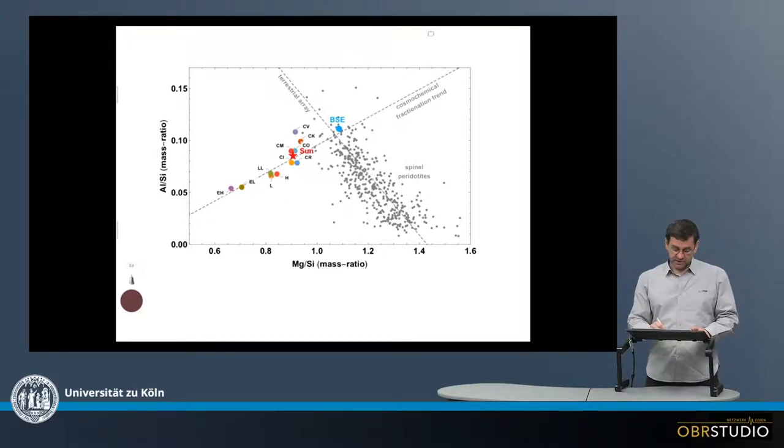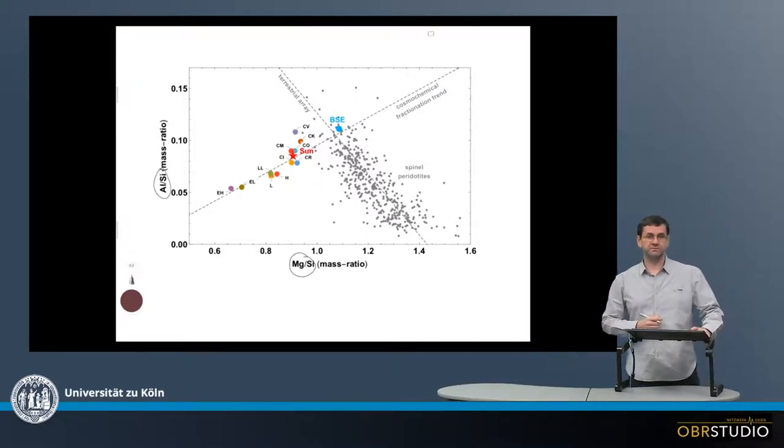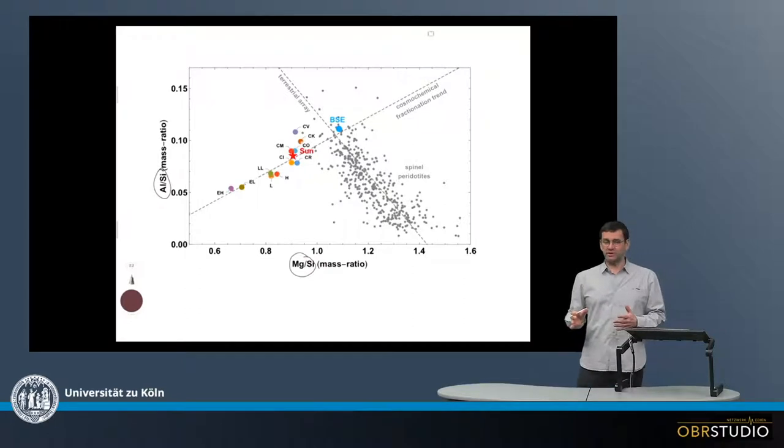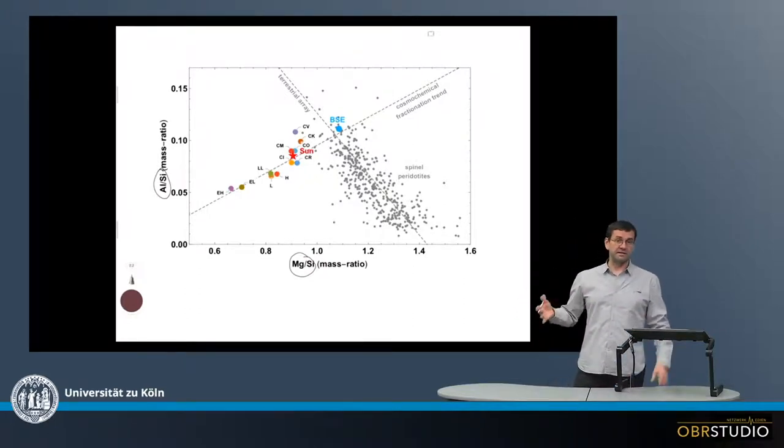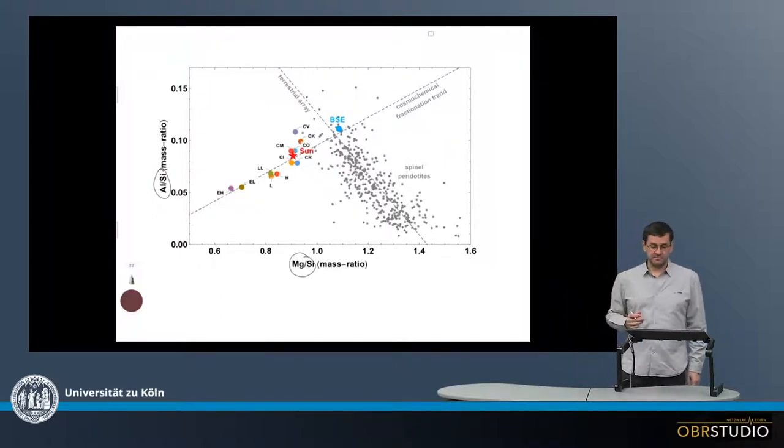On the x-axis here is the magnesium-silicon ratio, and on the y-axis is the aluminum-silicon ratio. Now these three are quite interesting elements, as magnesium and silicon are main elements and aluminum is a refractory element.